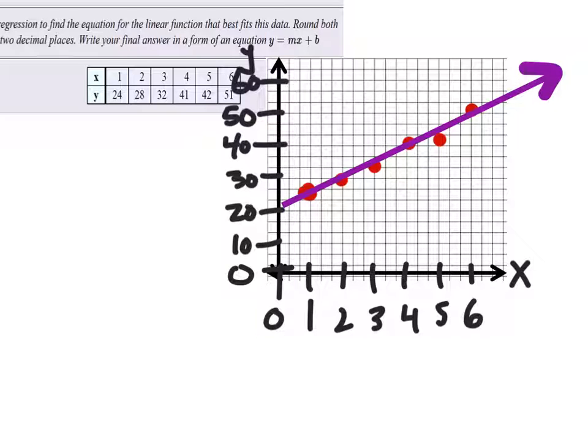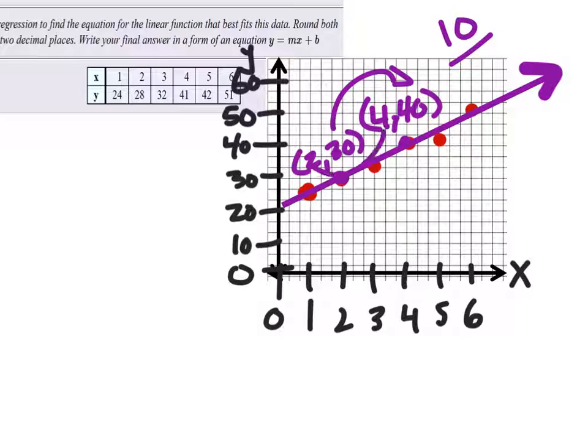Well, now we need the slope of this line. So let's identify two points on the line. Again, we're ignoring these red points now. Well, even though they're pretty close. I mean, we could say maybe that that's 2, 30. And, what the heck, 4, 40. So my slope, that would be an increase in 10. And that would be an increase in 2. So my slope is 5.